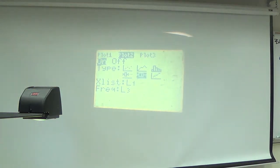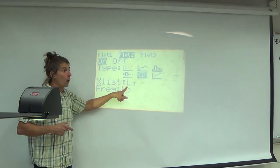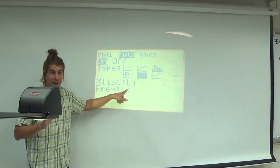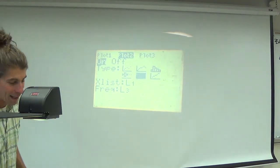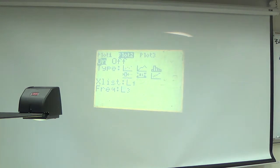Now you may have to do some finagling with the x list and the frequency, just like you had to do with your plot one. My x list is indeed L1. That's what I want. I want L1 to be where my data is. So I'm happy with that. But I don't want L3. I want that to have a frequency of one because I have raw data, yes?